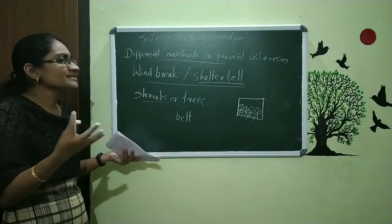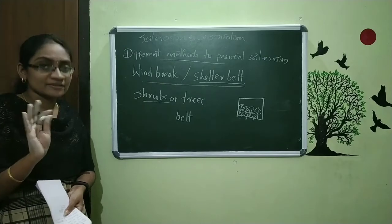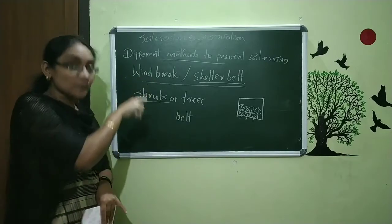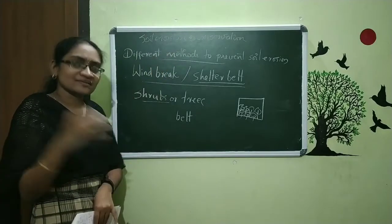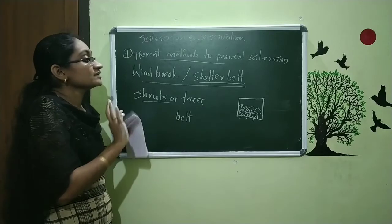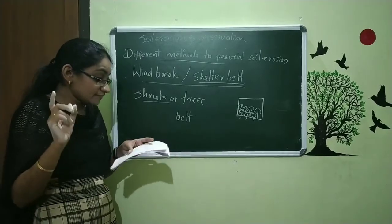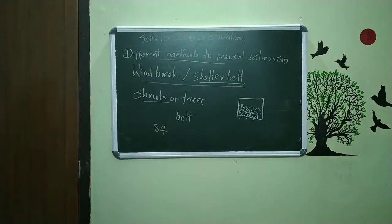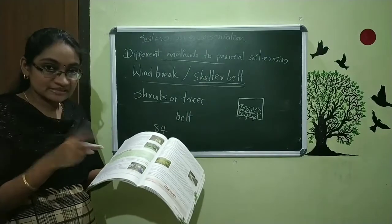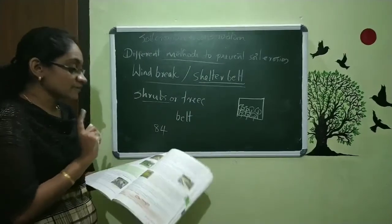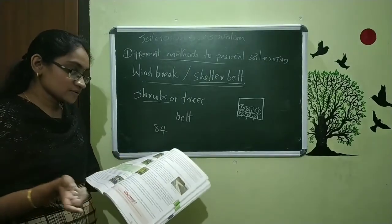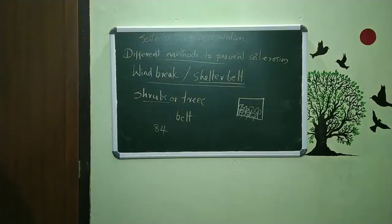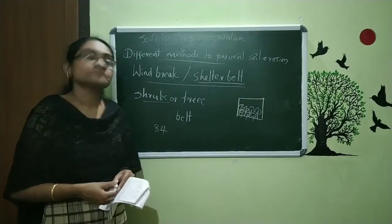That covers all the methods of preventing soil erosion — there are more details in your textbook, so just read and understand the points. This completes our chapter on soil erosion and conservation. For homework, go to page 84 and solve the multiple choice questions in the green box. Read the textbook pages we covered today, and notes will be provided. We will meet in the next class with exercise questions.